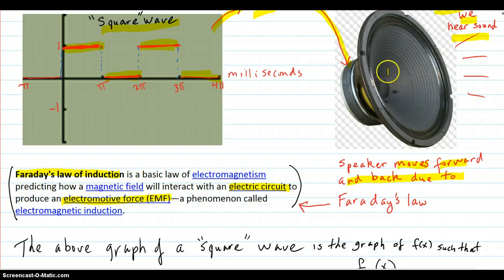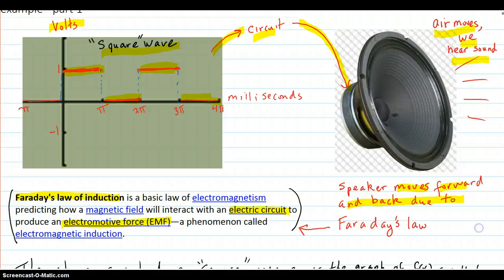And that's what causes the speaker to go back and forth. So maybe if the voltages are gradual and smooth, maybe the sound will be smooth. And if the voltages are jagged or abruptly changing, maybe the speaker will produce a sound that's more edgy.